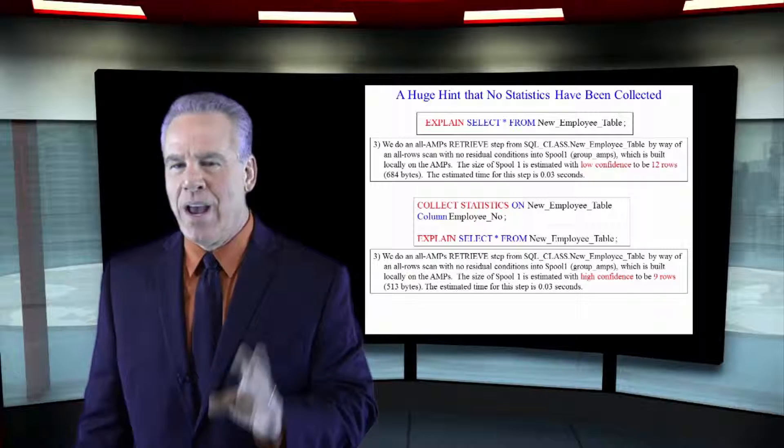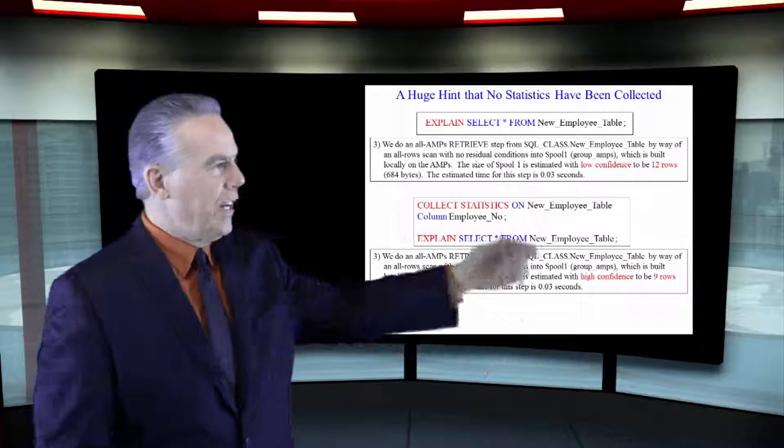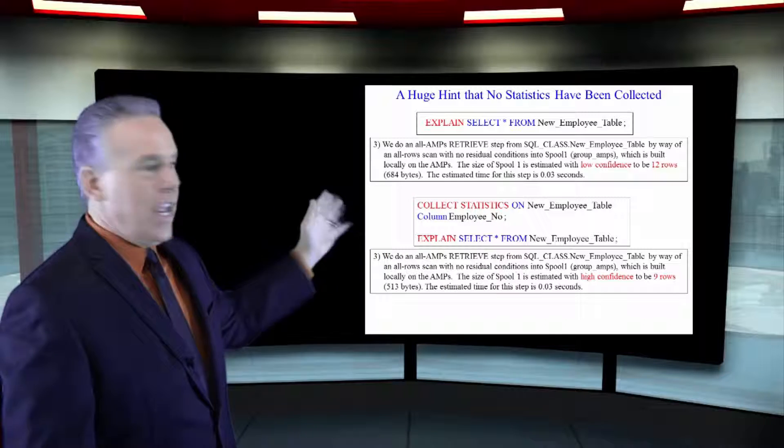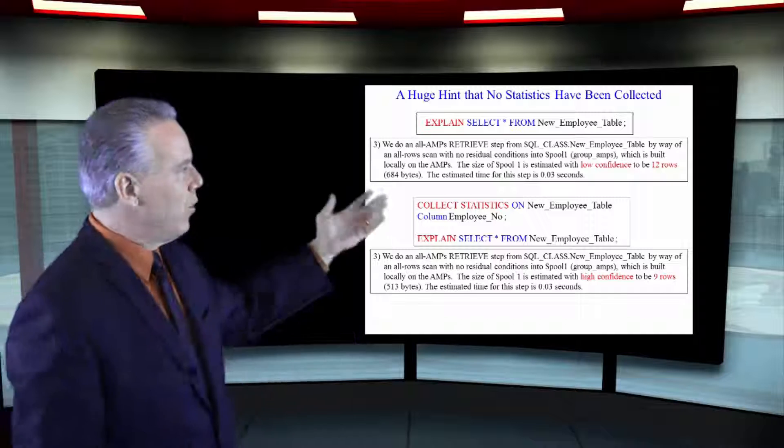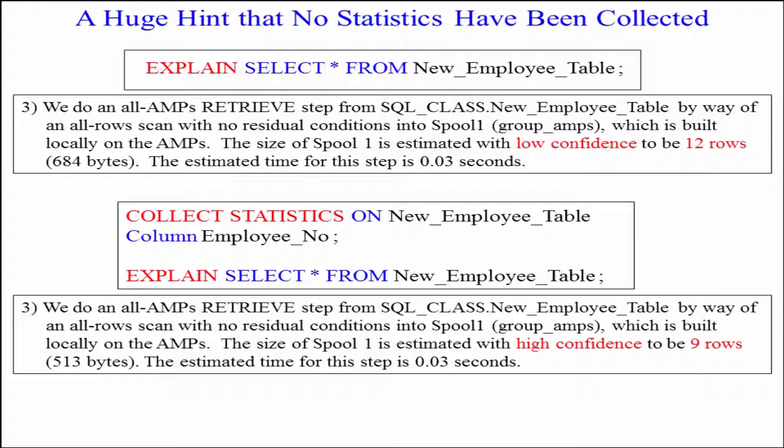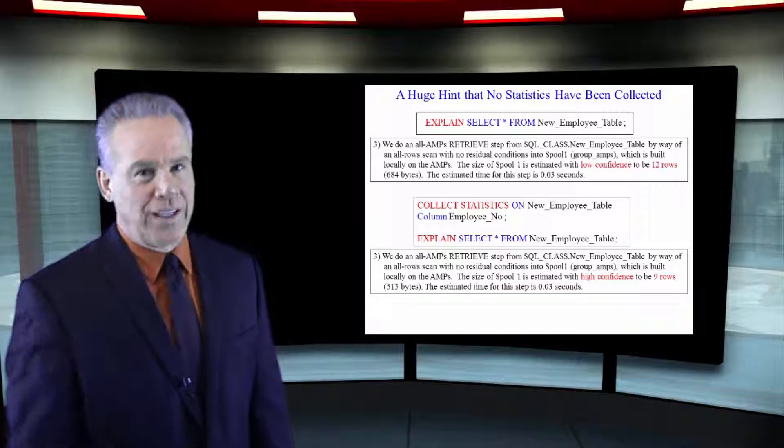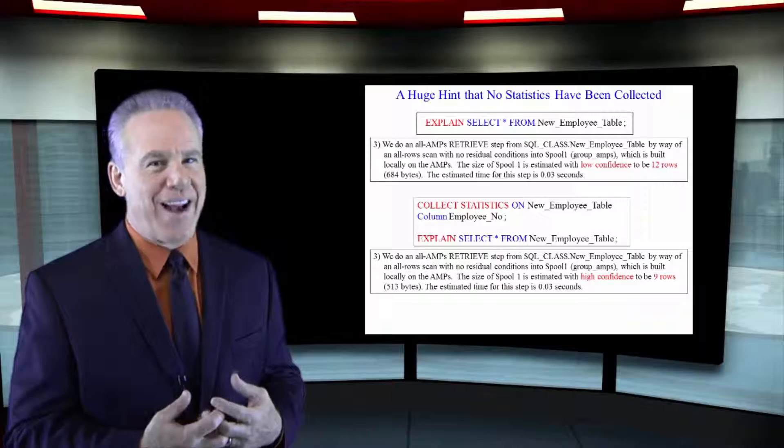Here's a real good way you might know if statistics were collected also. You've just run an EXPLAIN on your query. And in the explain plan, I've colored it in red, you see with low confidence, we think there's 12 rows. Low confidence doesn't always mean that statistics weren't collected, but you can bet that's a pretty good idea. As you can see in my next example here, it says I've got high confidence, I think there's nine rows out there. That means that the statistics were collected. The parsing engine's feeling very confident.